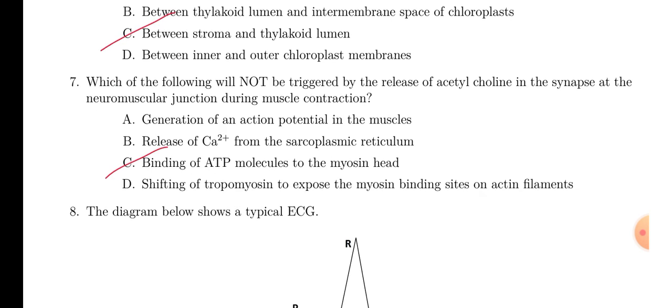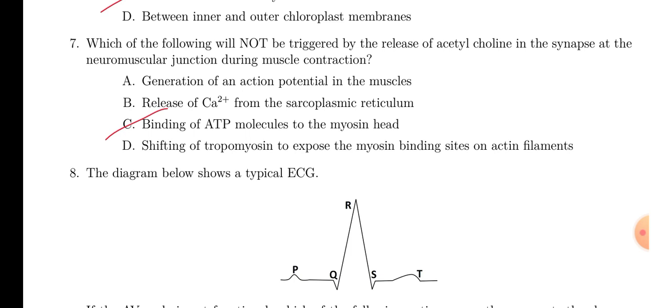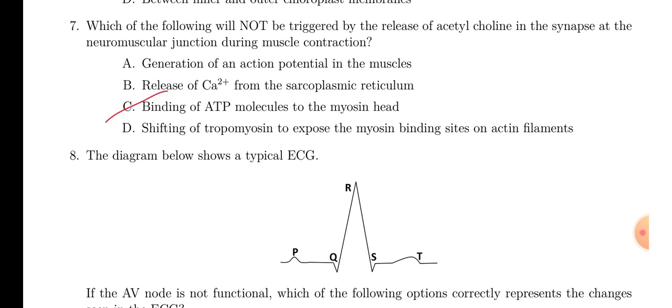Question number 7. Which of the following will not be triggered by the release of acetylcholine in the synapse at the neuromuscular junction during muscle contraction. So, what happens during muscle contraction? First, action potential comes at the end of axon. And neurotransmitters are released which bind with muscle receptor.